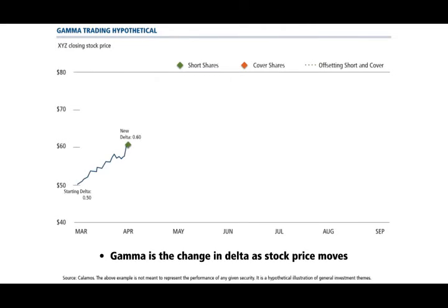As we move forward in time, we can see that the stock price rises and, as a result, our delta rises too. In order to keep a similar hedge profile, we need to short additional shares of the stock. After our adjustment, we see that the stock price falls. As it falls, our delta falls as well, and now we need to buy back the shares we shorted to get back to our original hedge.